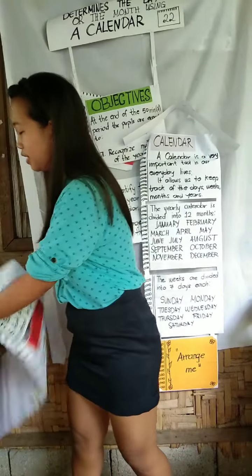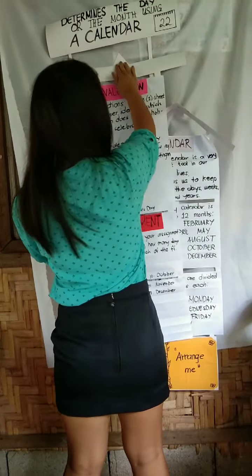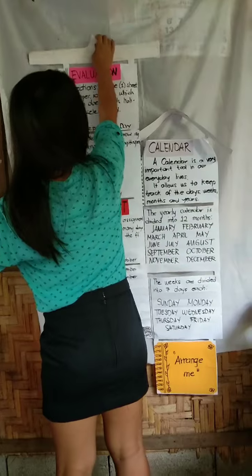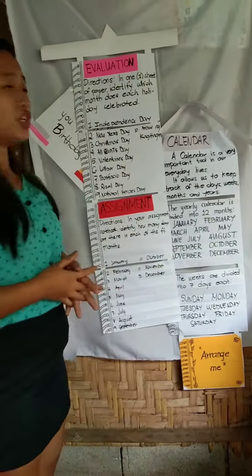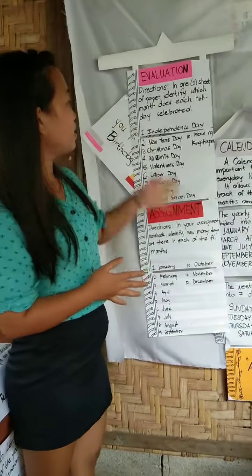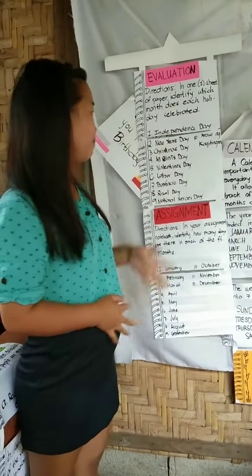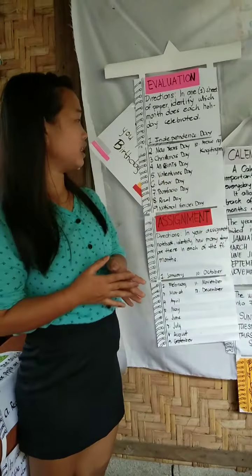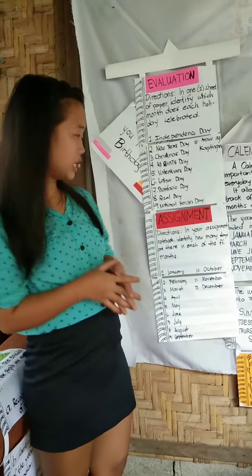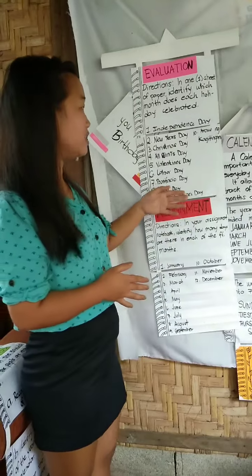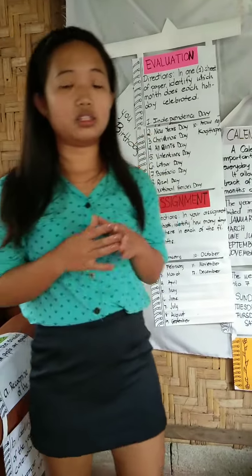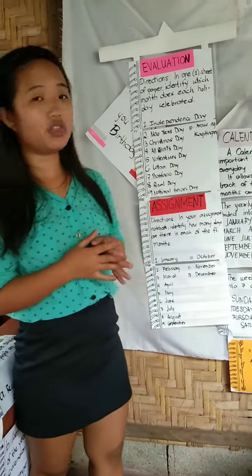Tutungo tayo sa ating evaluation. The direction is: in one sheet of paper, identify which month each holiday is celebrated. We have 10 holidays: Independence Day, New Year's Day, Christmas Day, All Saints Day, Valentine's Day, Labor Day, Bonifacio Day, Rizal Day, National Heroes Day, and Araw ng Kagitingan. I-identify nyo kung anong month ang ating sine-celebrate tuwing holidays. Identify which month each holiday is celebrated.